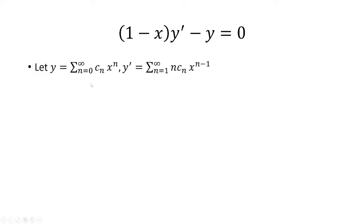We're going to define y to be the sum from n=0 to infinity of c_n times x^n. The derivative, we're going to start it at n=1, and that's going to be n times c_n times x^(n-1).